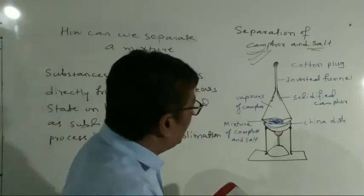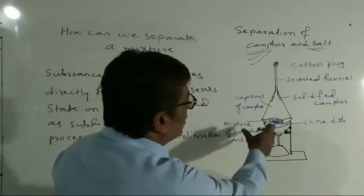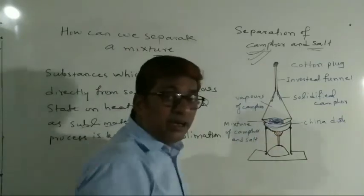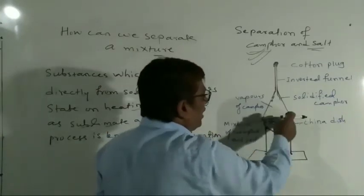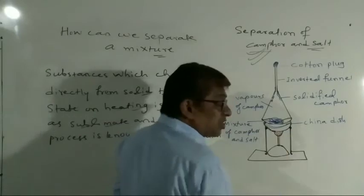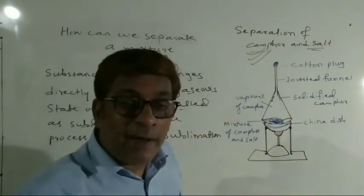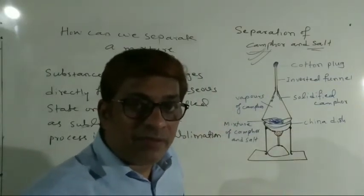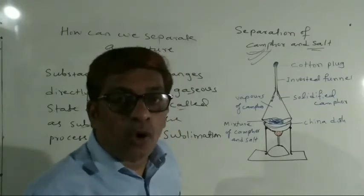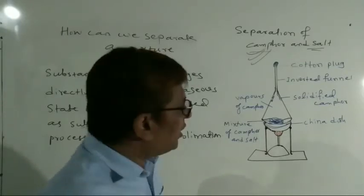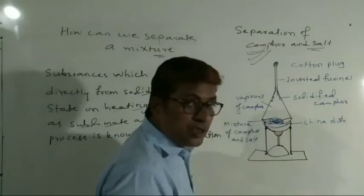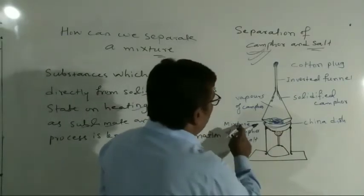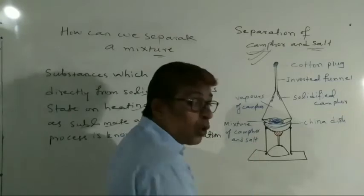Separation by sublimation — here there is a funnel as a device, this vessel. When you heat it strongly it will not break, that is why we are taking a China dish. In the China dish, camphor and salt will be there.